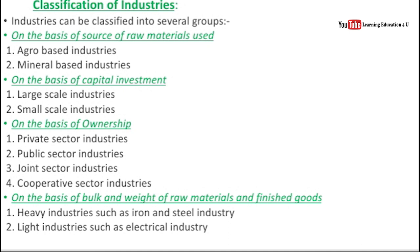Classification on the basis of source of raw material: first are agro-based industries, which use agricultural raw materials, and second are mineral-based industries, which use minerals. Industries are also classified as basic industries, which relate to export, and consumer industries, which serve local people. The next classification is on the basis of capital investment.